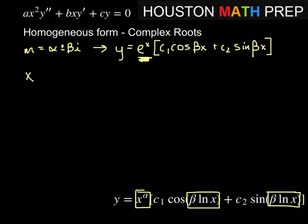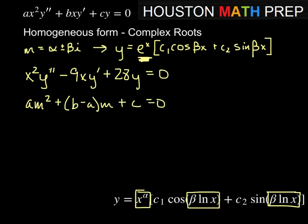Let's work an example. We'll work x squared y double prime minus 9xy prime plus 28y equals zero. So here our form is am squared plus b minus a times m plus c equals zero. Here a equals 1, b equals negative 9, c is 28. According to that, we'd have 1m squared, b minus a is negative 9 minus 1, so that would be negative 10m, plus 28 equal to zero.